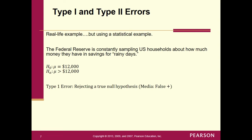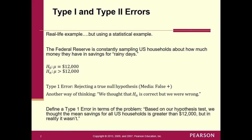For a Type 1 error: we decided to reject the null, so we thought the alternative was correct — we thought mu was greater than $12,000, but it really wasn't. Another way: we thought HA was correct but were wrong. So the Type 1 error in words: based on the test, we thought the mean savings for all U.S. households is greater than $12,000, but in reality it wasn't.